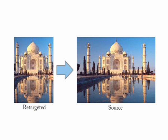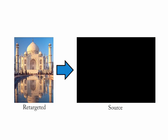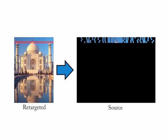For a given image and target size, the multi-operator retargeting problem can thus be defined as finding the path that produces a retargeted image which is most similar to the original image. We propose a novel similarity measure based on a bidirectional order-preserving mapping between the retargeted image and its source.